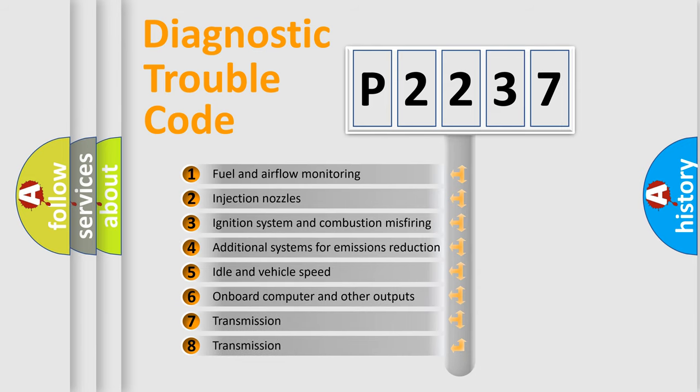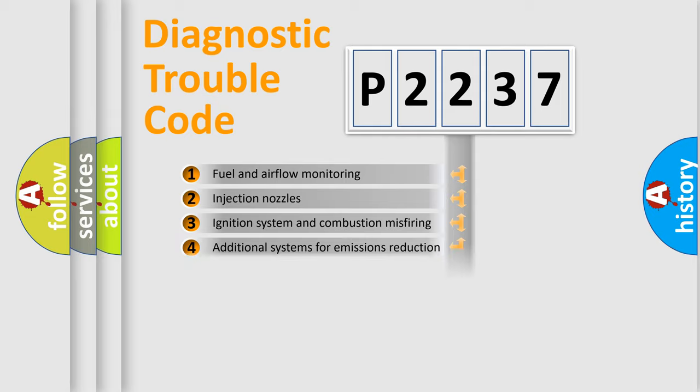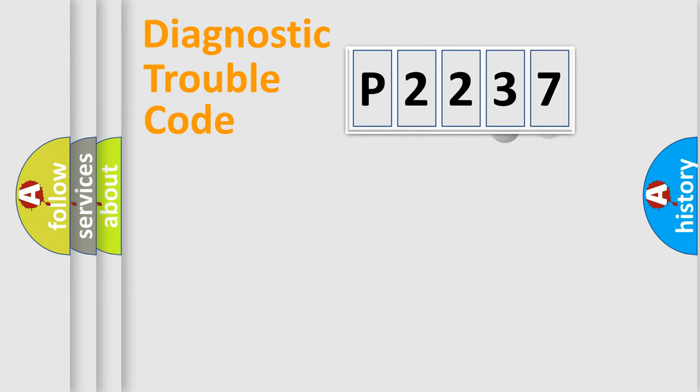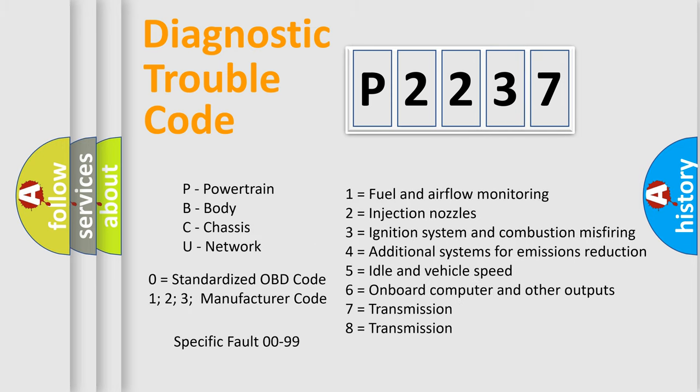The third character specifies a subset of errors. The distribution shown is valid only for the standardized DTC code. Only the last two characters define the specific fault of the group. Let's not forget that such a division is valid only if the second character code is expressed by the number zero.